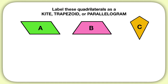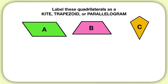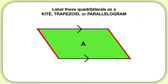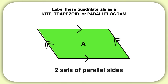Now let's look at these three shapes. We'll start with shape A. We can see that these two sides are parallel — they're moving in the same direction. We can also see these two sides are moving in the same direction, so they're parallel to each other. We would say that shape A has two sets of parallel sides.